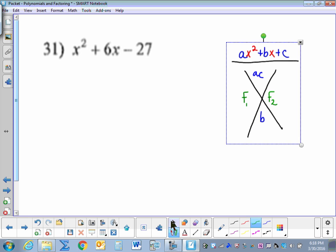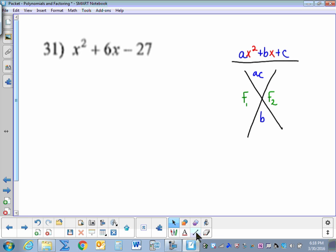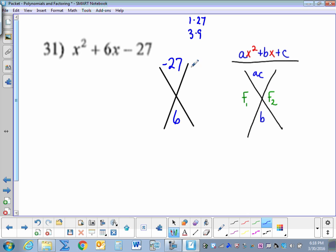Number 31, x squared plus 6x minus 27. So I begin the same way. I draw an X. And then I multiply a times c, 1 times negative 27 is negative 27, and I write b down here, which is 6. Now I need the factors of negative 27 that add to 6. So first I'm just going to write the positive ones and see if I can see a combination here. 1 times 27, 3 times 9. 3 times 9, I know the difference is going to give me a 6.